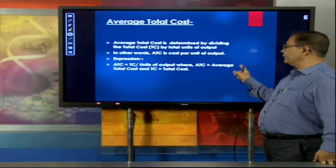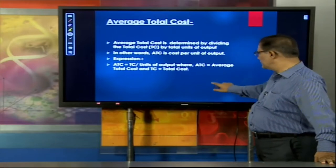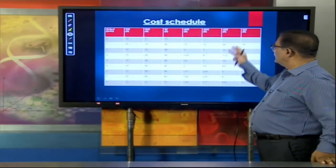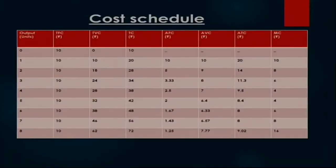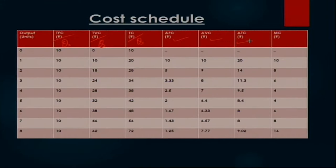Average total cost — which I told you how to calculate — again the schedule is there. Just recall कि मैंने क्या discuss किया था — इन सभी concepts को Q से divide कर दो, तुम्हें सारे values मिल जाएंगे। अब इस पर ज्यादा time लगाने की बजाय आगे देखें, कि कैसे इसको graphically present कर सकते हैं, graph का shape क्या होगा, और कैसे यह decision making में हमें support करेगा।